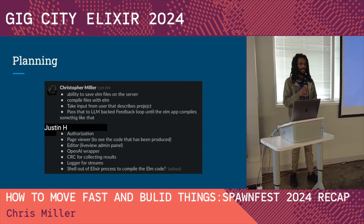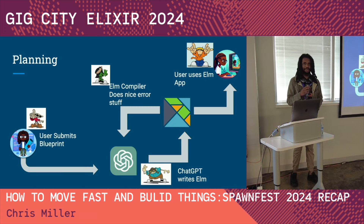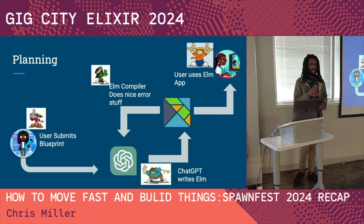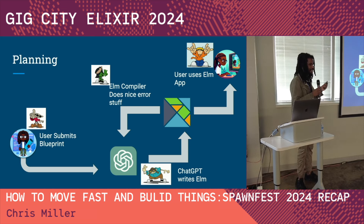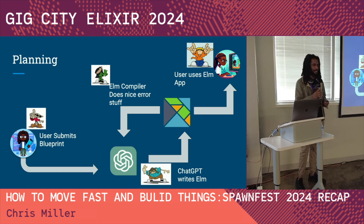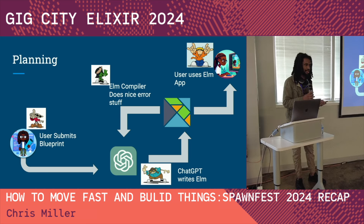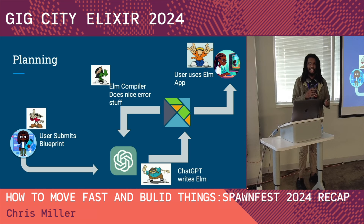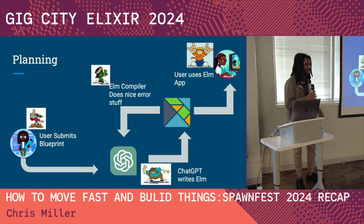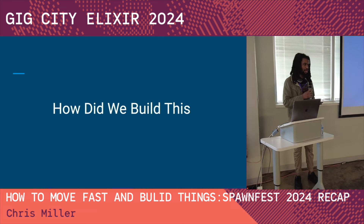The overall goal looked like this: the user submits a blueprint, ChatGPT takes that blueprint and writes some Elm code, sends it to the Elm compiler, and maybe it compiles or maybe it sends back some errors. ChatGPT then takes those errors and writes more Elm code until it compiles. Hopefully the user gets an Elm app — a website — at the end without having to click on any complicated Wix buttons.